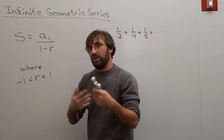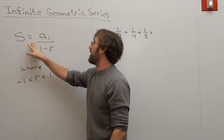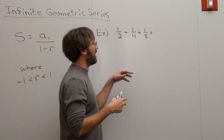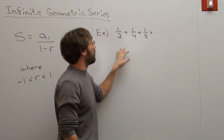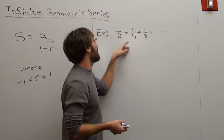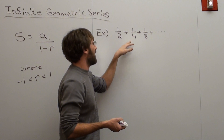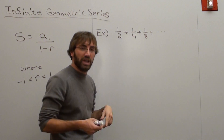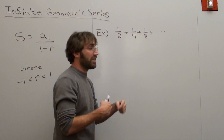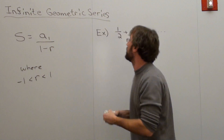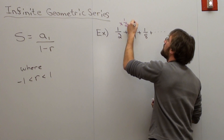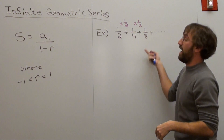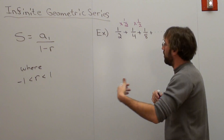I'm going to use the formula a₁ over 1 minus r. For the common ratio r in a geometric series, you can look at what you're multiplying each term by. If you take one half divided by one fourth, you get 2 — but dividing by 2 is the same as multiplying by one half. So I'm multiplying each term by one half to get to the next term: one half times one half is one fourth, one fourth times one half is one eighth. It's the same common ratio over and over.